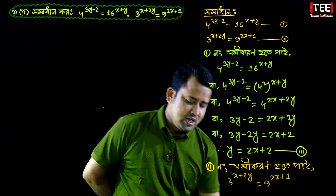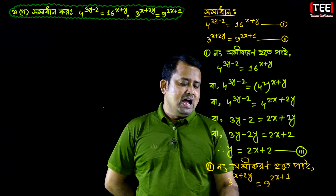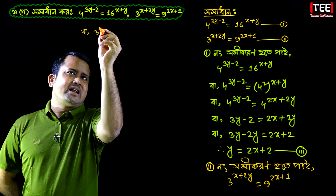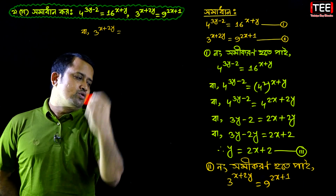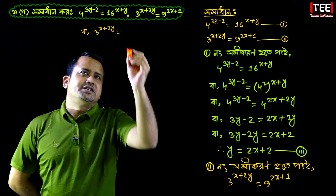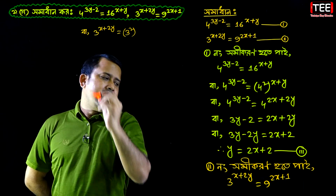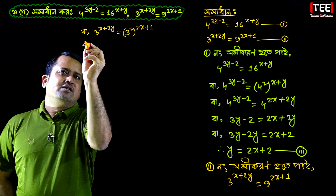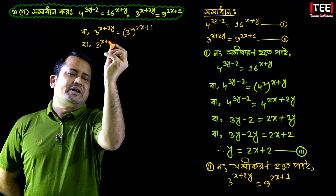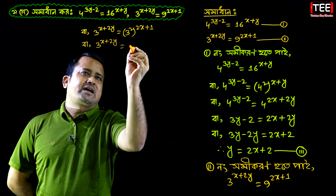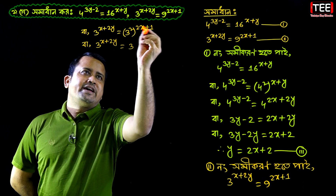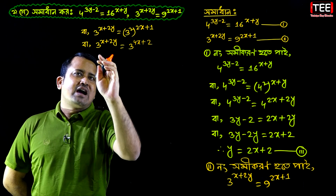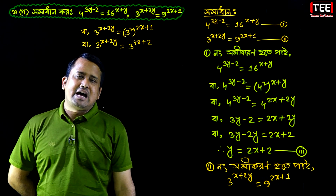2x plus 1. Note that 9 is 3 squared, so 3 squared means 9. Therefore 2x plus 2y equal to 9, and we can write 3 squared, so 2x plus 1, meaning 2y equal to the power 2x plus 1.